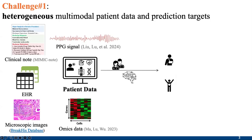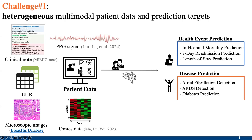The first challenge we face is heterogeneous multi-modal patient data and prediction targets. From the data side, patient data is multi-modal and very complex — for instance, we can have clinical notes, which is text, PPG signal, which is waveform, and so on. The prediction targets are also very diverse, spanning from general health event prediction such as in-hospital mortality or length of stay prediction, to disease prediction such as atrial fibrillation and ARDS detection. Traditionally, researchers had to design ad hoc prediction models for each modality and each prediction target.